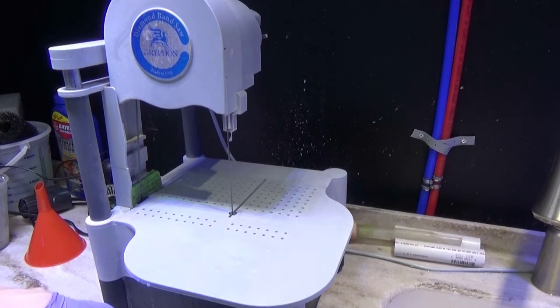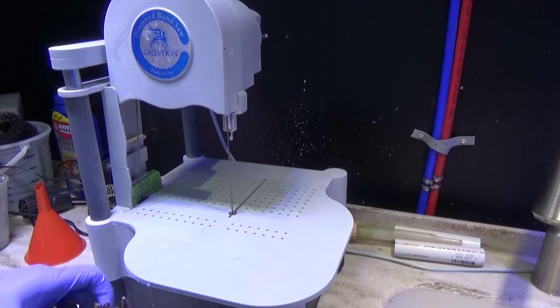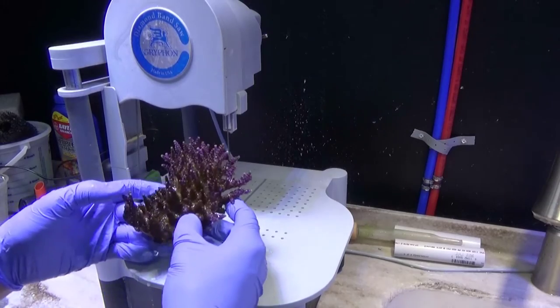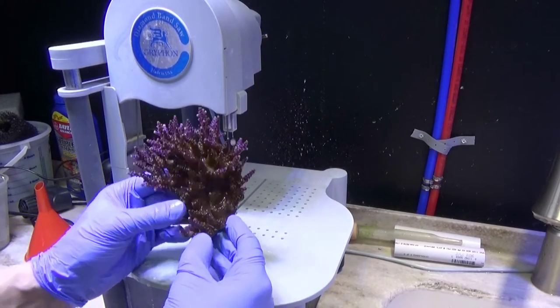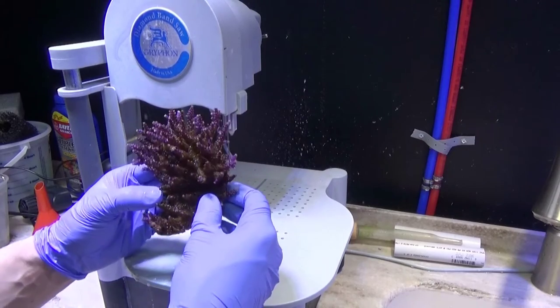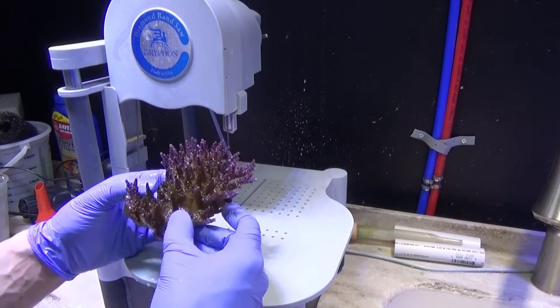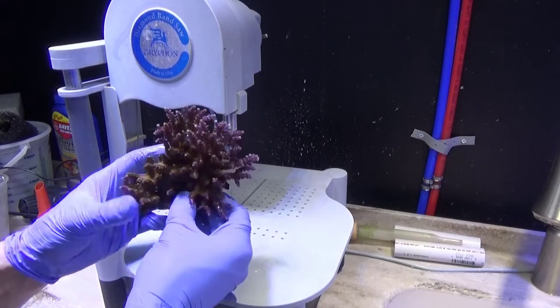Good morning Reapers, I'm Daniel and today we will be fragging Jason Fox's Barney Acropora. We have the Griffin bandsaw here with us and we'll be using it to cut the coral and finish the edges on it.